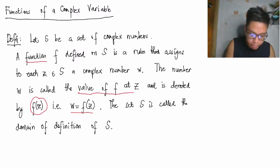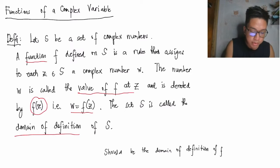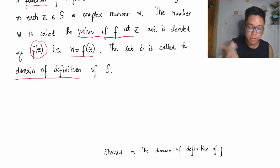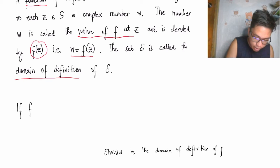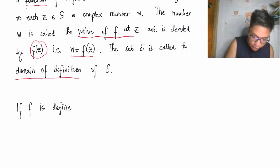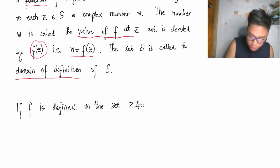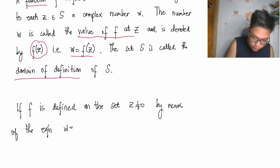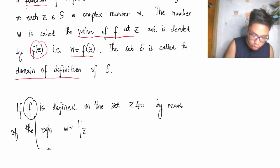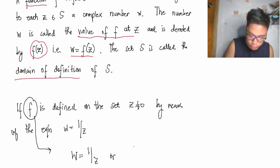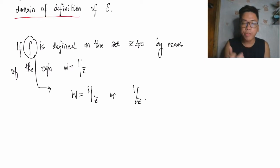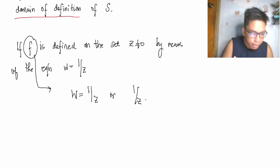The set S is called the domain of definition. For example, if f is defined on the set at which z is not zero by means of the equation 1/z, then f may be referred to as the function w = 1/z, or simply 1/z.